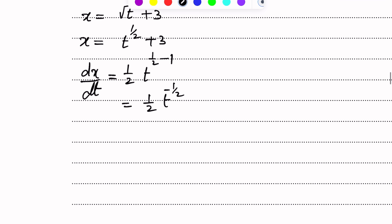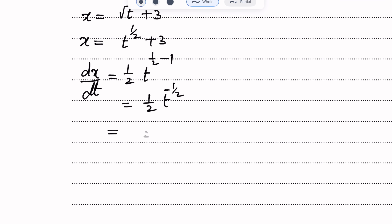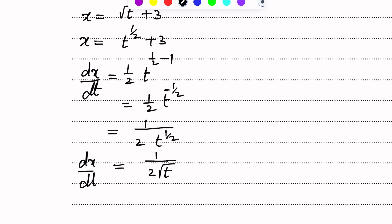These are two parametric equations, and here the chain rule is used. First of all, we will differentiate each equation with respect to the corresponding variable. x equals square root of t plus 3. So we will find dx over dt by differentiating with respect to t. This is in power form.